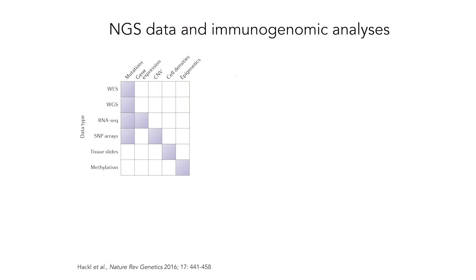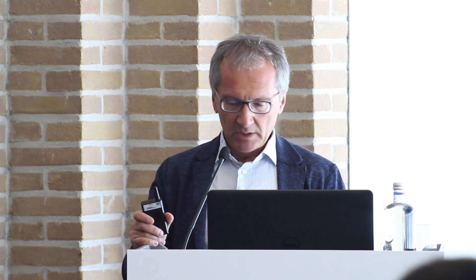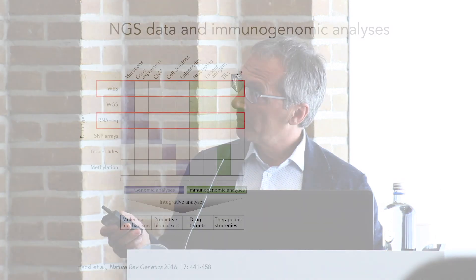This project was designed by geneticists, mostly focusing on using exome sequencing, whole genome sequencing data, and RNA sequencing data to identify copy number variations, gene expression, and also epigenetics. But on top of this, you can use this data also to extract immunologically relevant parameters.